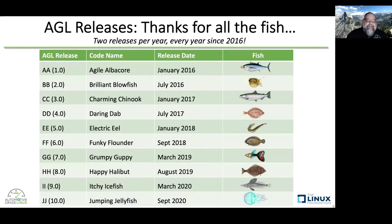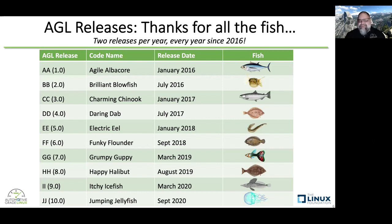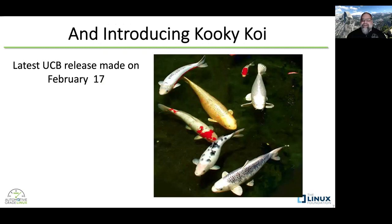For those of you who are new to AGL, you've probably heard us talking about fish. One day in the early days of AGL, they said, "Walt, just naming things version one is kind of boring. We need a better name." So I put on my thinking hat and came up with fish names. We've done two releases every year since 2016, each one named after a fish. We did the Jumping Jellyfish release 10.0 in September. And most recently, we'd like to introduce Kuki Koi, the latest UCB release made just about three or four weeks ago on February 17th.